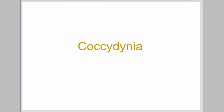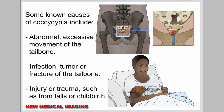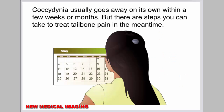Coccydynia is pain around the area of the tailbone. Often the cause is unknown. Some known causes of coccydynia include abnormal, excessive movement of the tailbone; infection, tumor, or fracture of the tailbone; injury or trauma such as from falls or childbirth. Sometimes coccydynia may be caused by prolonged sitting on a hard or narrow surface. Coccydynia usually goes away on its own within a few weeks or months, but there are steps you can take to treat tailbone pain in the meantime.